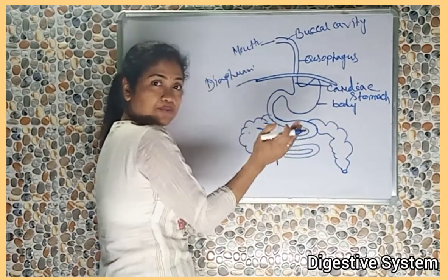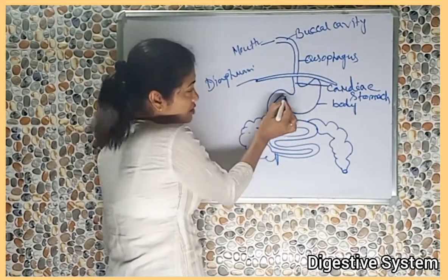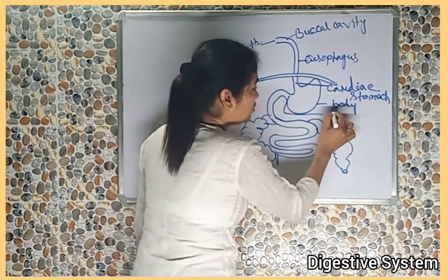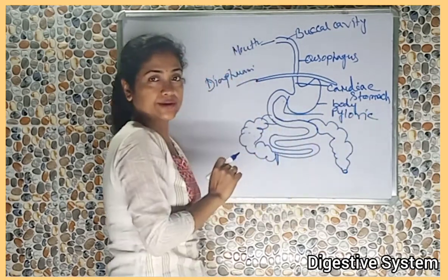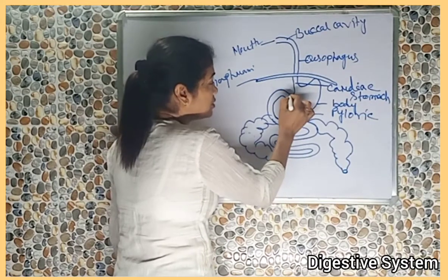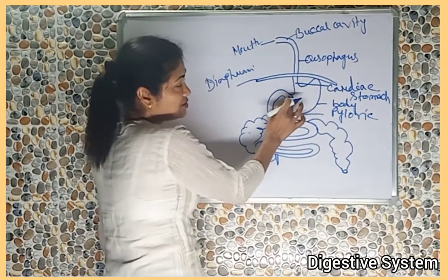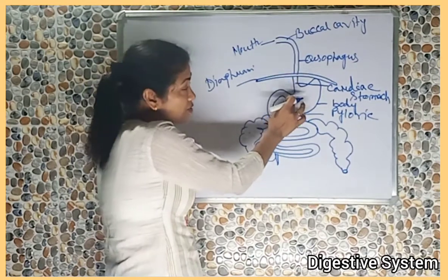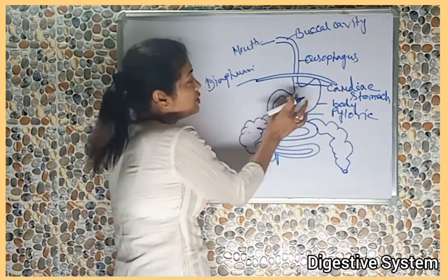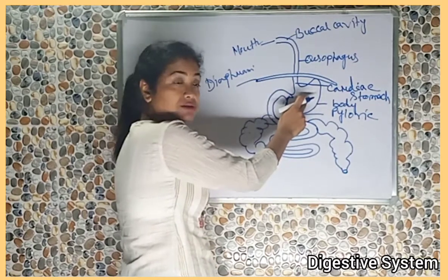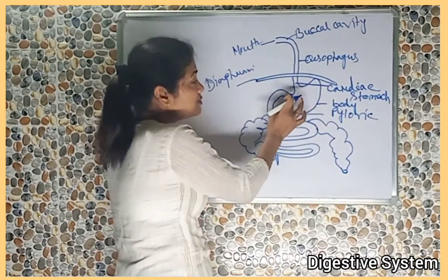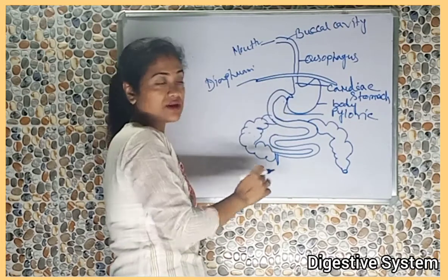And the constricted part of the posterior stomach is known as the pyloric stomach. The pyloric stomach is guarded by a pyloric sphincter. The pyloric sphincter prevents the back flow of food from the duodenum part into the stomach, because after partial digestion, partially digested food particles enter into the duodenum part of the small intestine from the stomach.